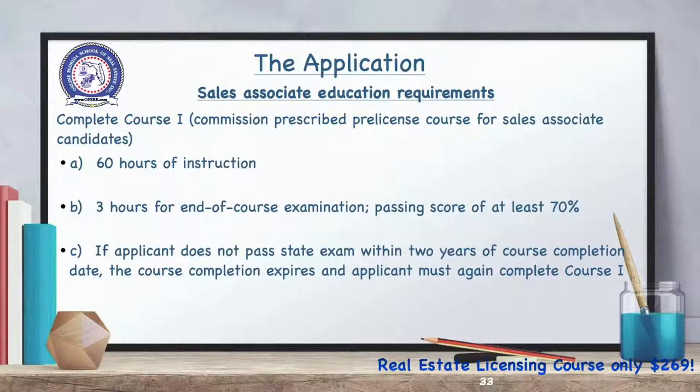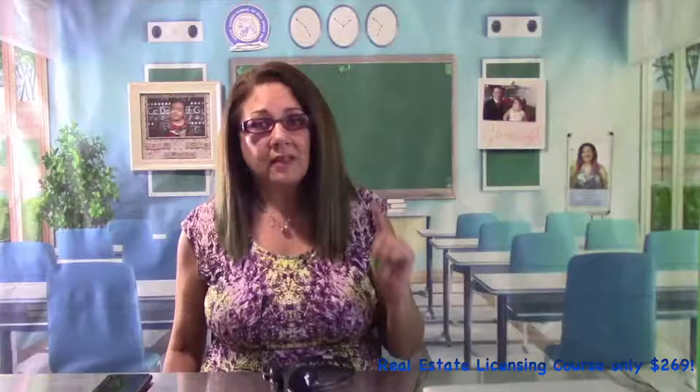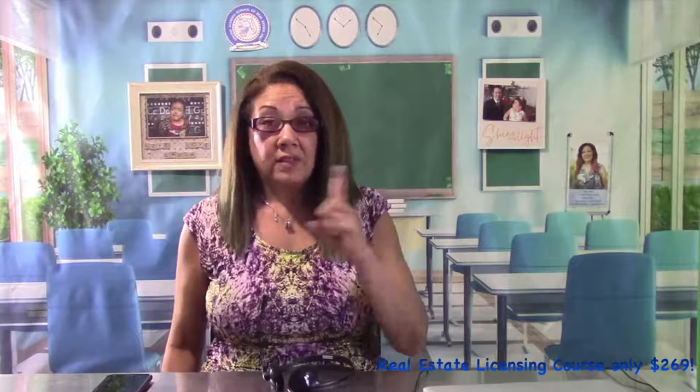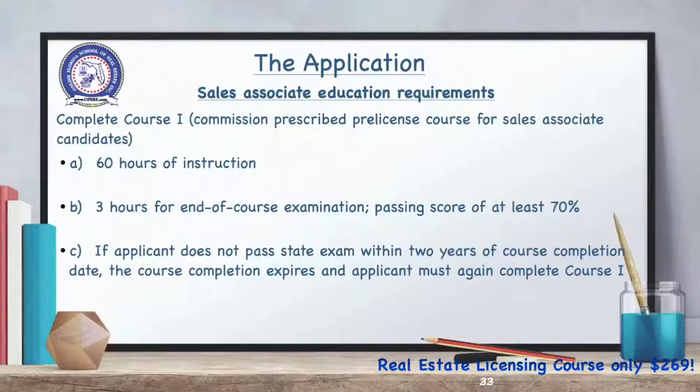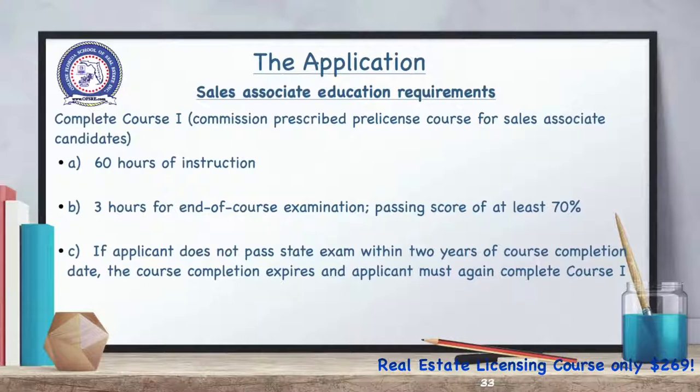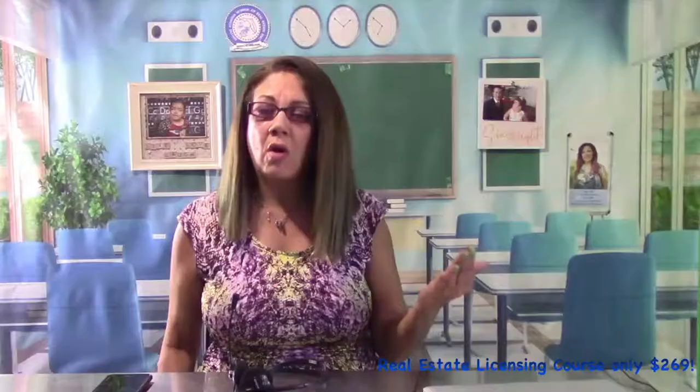After successfully completing the pre-licensing education requirement, applicants must pass the state license exam with a 75. If an applicant does not pass the state licensing exam within two years after the course completion date, the course completion expires and the applicant must complete the pre-licensing education course again. So after two years, if you haven't taken your state exam, you have to do it all over again.